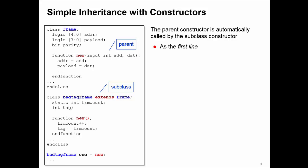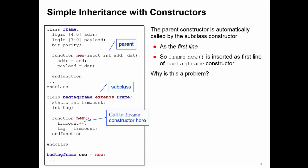This requires two arguments, add and dat, to initialize the address and payload properties. My subclass BadTagFrame also has a constructor which is used to initialize the frame count and the tag methods. By default we insert a call to the frame constructor as the first line of the BadTagFrame constructor, and this is going to cause us a problem. The problem is that the frame constructor requires the add and dat arguments. It requires values for these two arguments, and the default call is not passing those values up. So I get a compilation error.